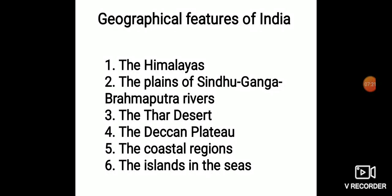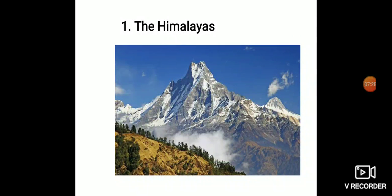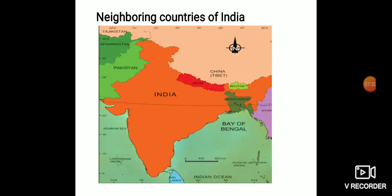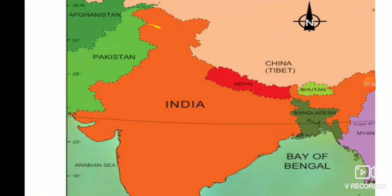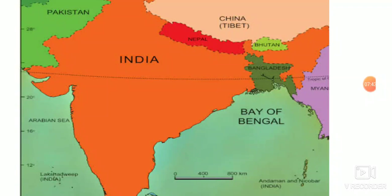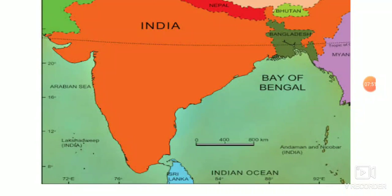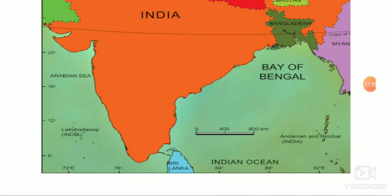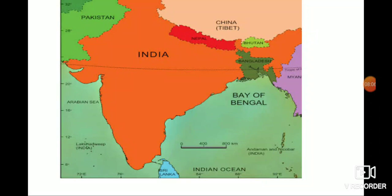At its north lie the Himalayas. To the east is the Bay of Bengal. To the west is the Arabian Sea. To the south is the Indian Ocean. I'll show a presentation: at the north is Himalaya, to the right side Bay of Bengal, to the left side Arabian Sea, and at the bottom Indian Ocean. The islands of Andaman and Nicobar are in the far right corner, and Lakshadweep islands are to the left side near the Arabian Sea.